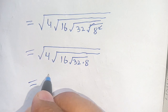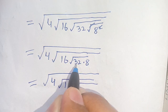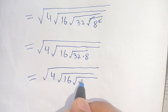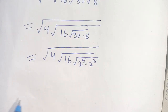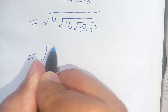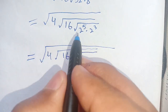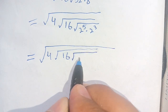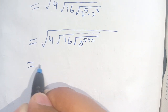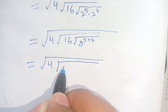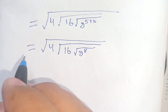In the next step we can write it as square root of 4 times square root of 16 times square root of 32. Now 32 can be written as 2 power 5, and 8 can be written as 2 power 3. Since the base is the same, we add the powers: 2 power 5 plus 3. So we have square root of 4 times square root of 16 times square root of 2 power 8.